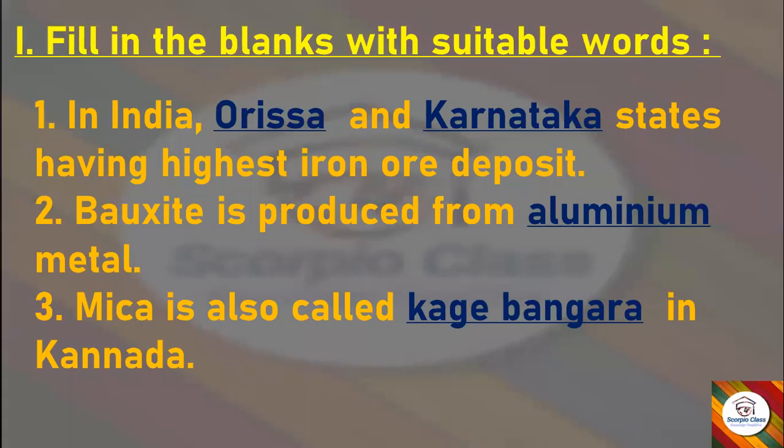Let's start with the notes. We have first — Fill in the Blanks. The first one: In India, dash and dash states have the highest iron ore deposit. Answer: Orissa and Karnataka. Next: Bauxite is produced from dash metal. Answer: Aluminum. Next: Mica is also called dash in Kannada. Answer: Kage Bangara. So these are the fill in the blanks from this chapter.